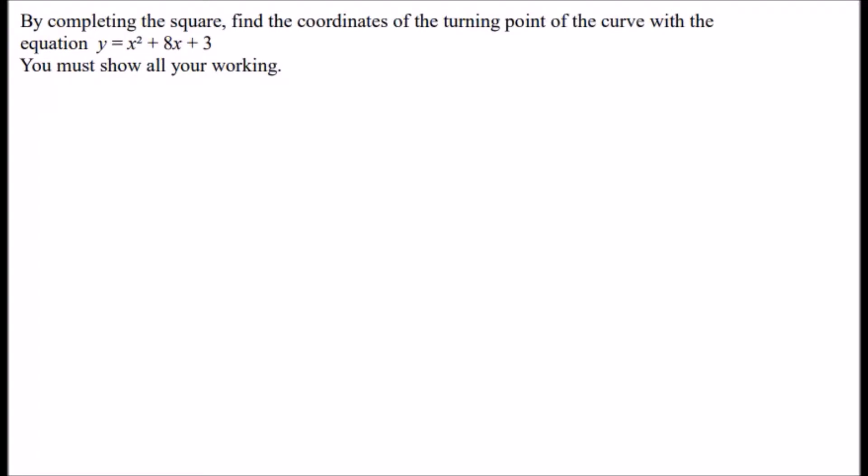Now the general form of completing the square, if you remember from the previous video, is that it's always going to look like this: the expansion can be rewritten as (x plus a) all squared, which is the complete square bit, plus b, which is the remainder bit. This is the part we remove from the square.